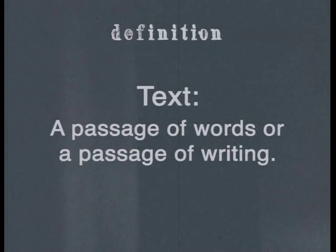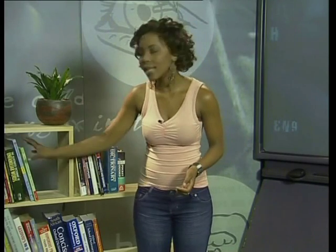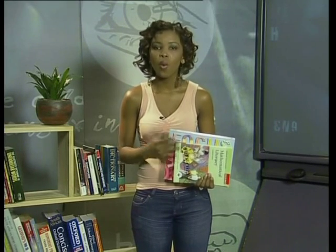Let's consider the word context. To do this, we have to look at the word text. A written text can be defined as a passage of words or a passage of writing. You already know what a textbook is — here are some maths and science textbooks, which are full of texts or passages of writing about a subject. From the words we already know — text and textbook — we can figure out that context has something to do with a text.